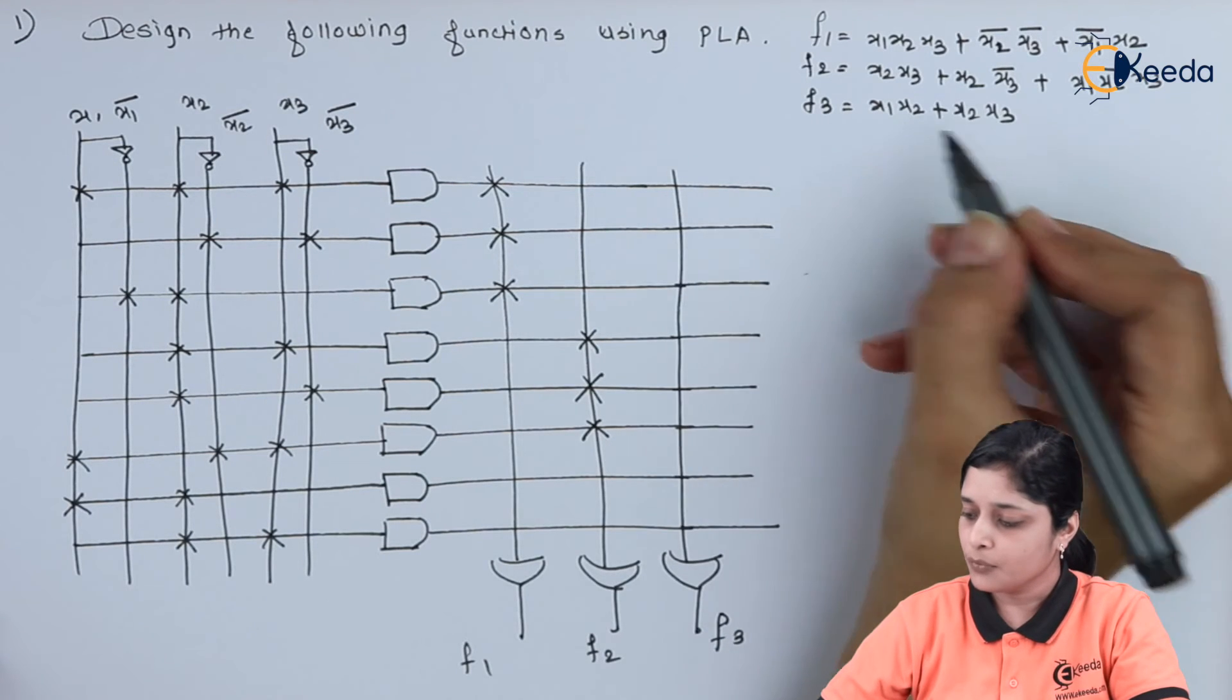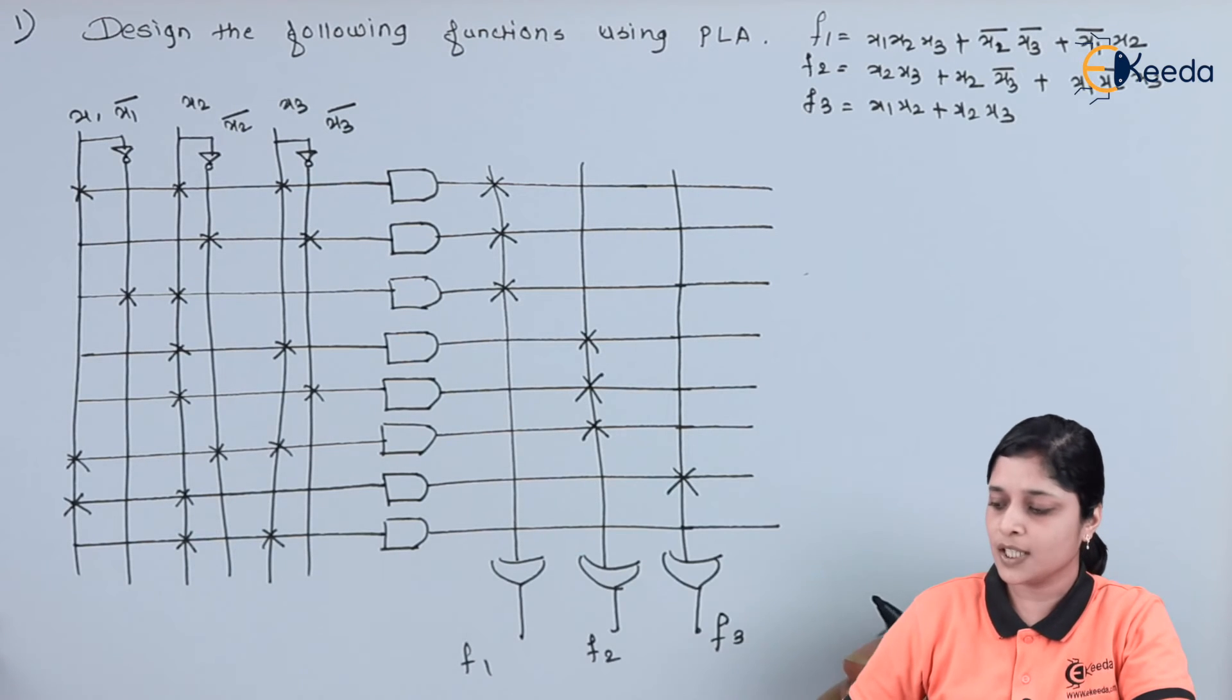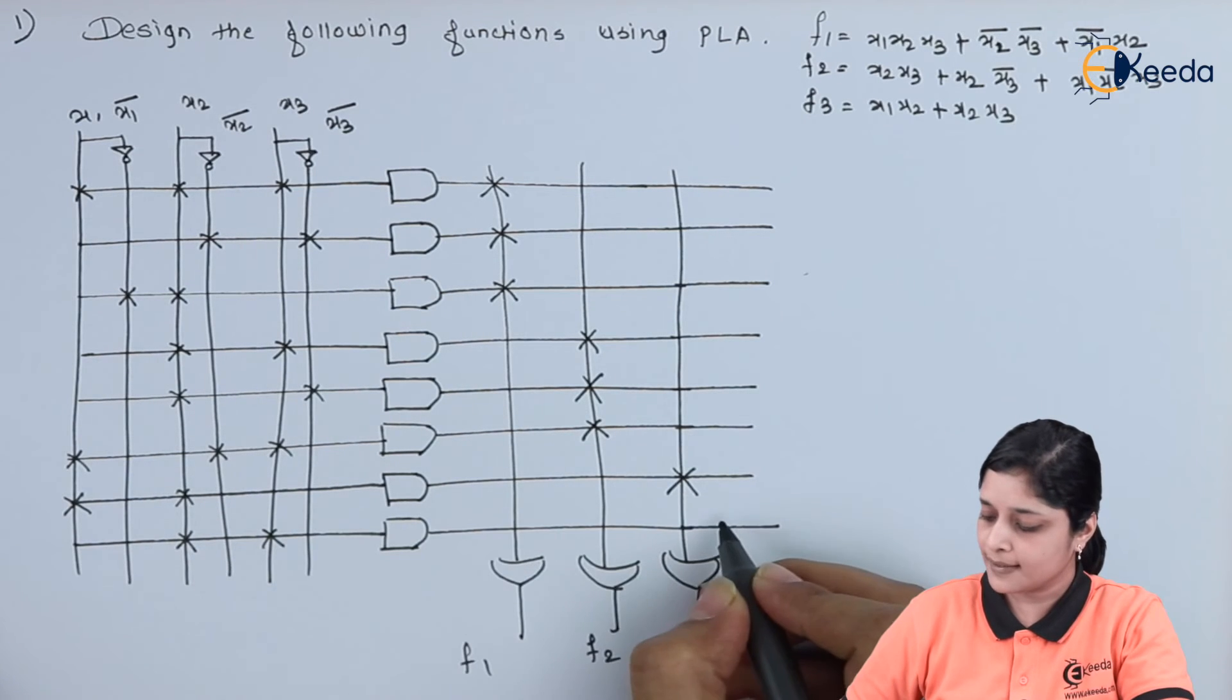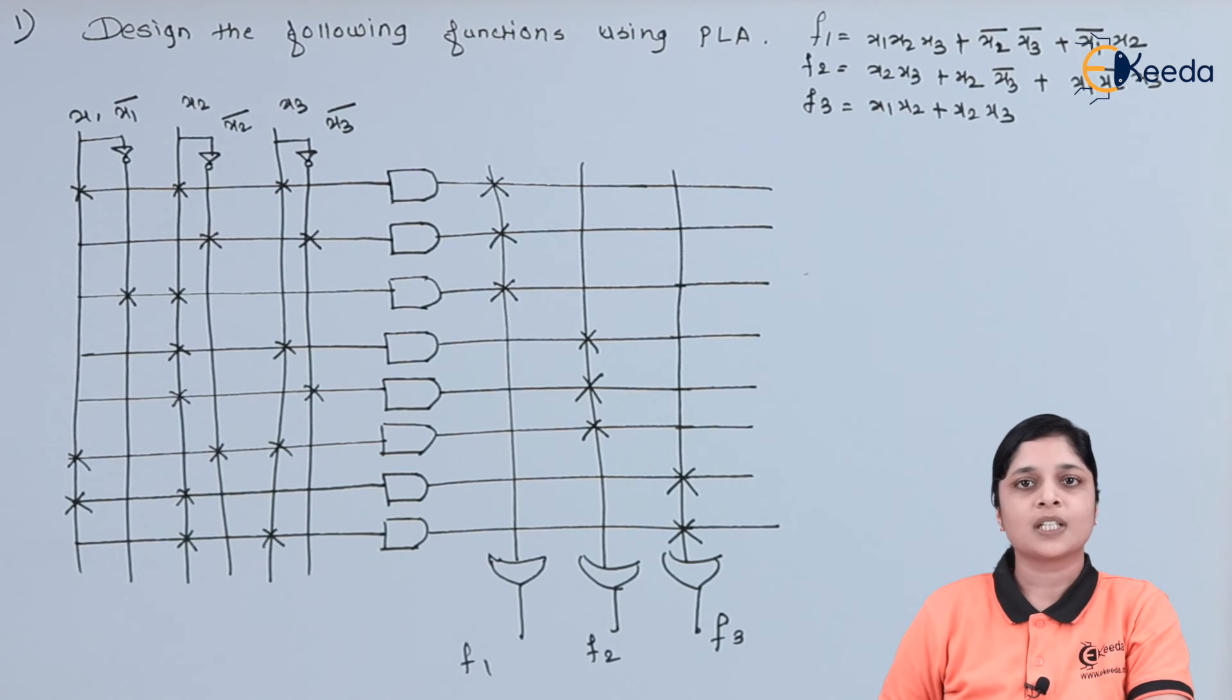Now, for F3, we want X1, X2 as output. So, we will make cross over here. And for X2, X3, we will make cross like this. So, in this way, you have to implement with the use of programmable OR structure and programmable AND structure. This is all about the numerical based on PLA.